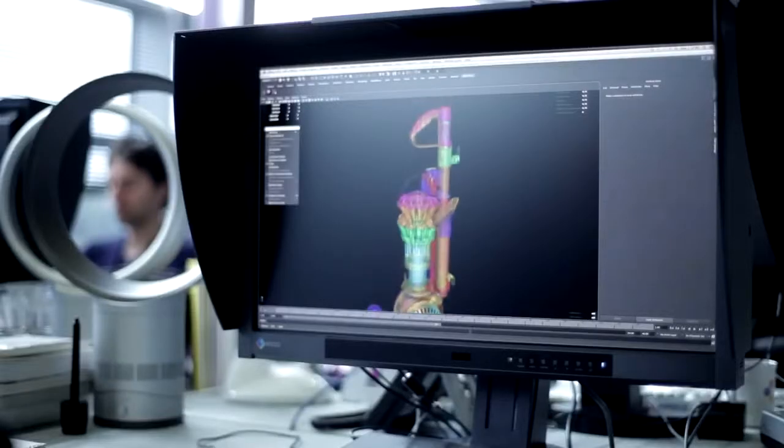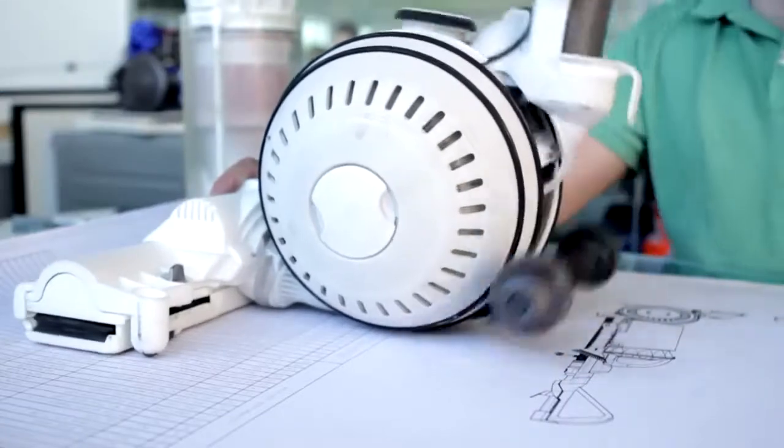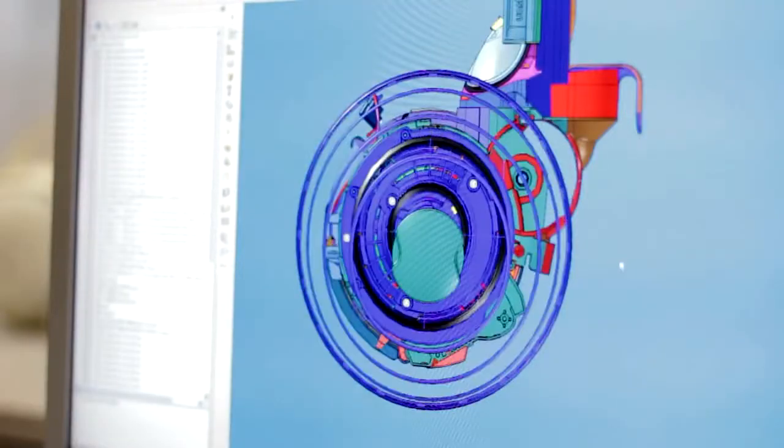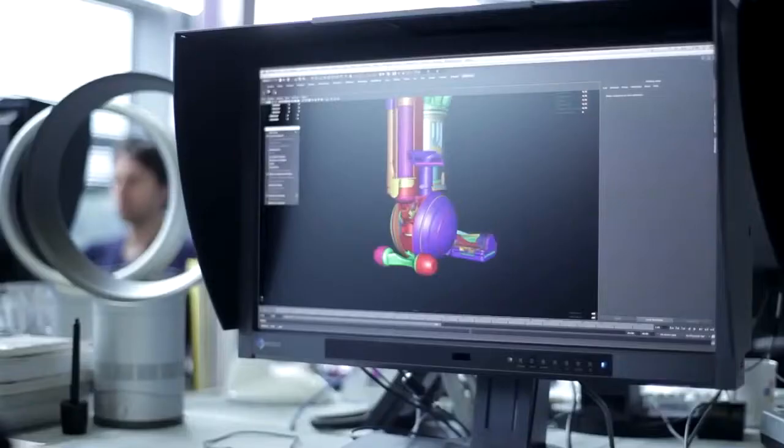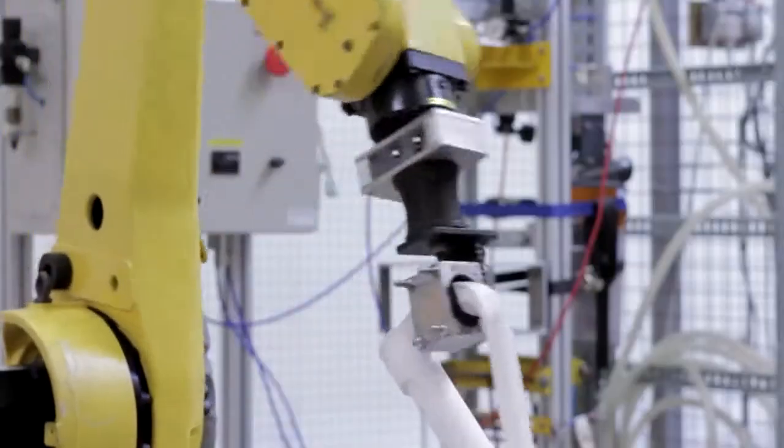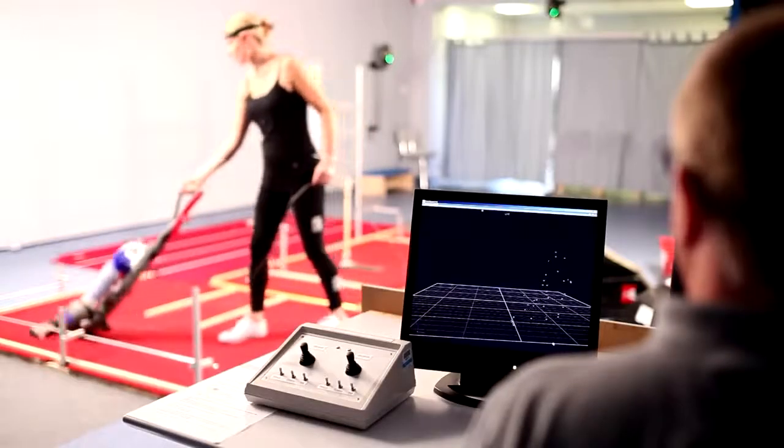The brief of DC50 was to make a lightweight machine with the performance of a full-size upright. Every assembly within this machine has new technology within it, so over 100 engineers helped design this project and over 1,000 prototypes were made before we put this into production.